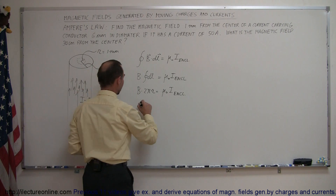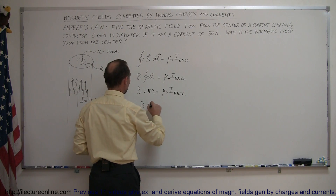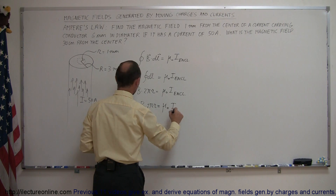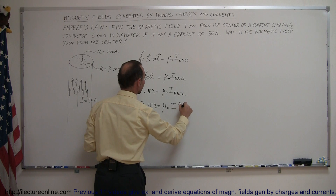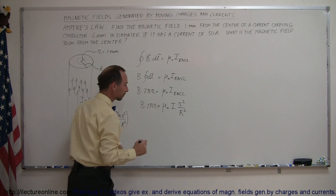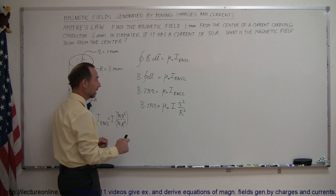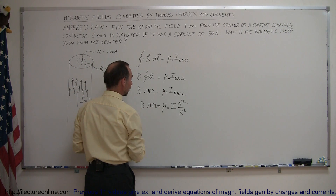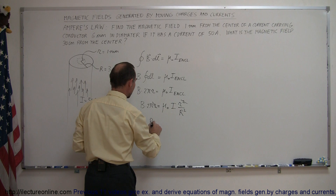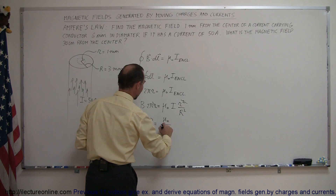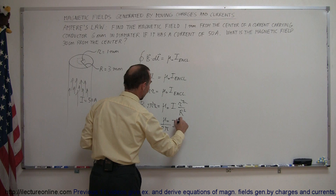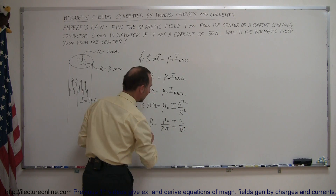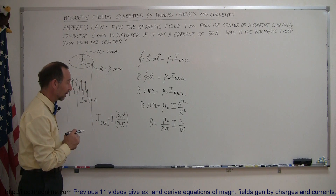We can put that in, so B times 2π times little r equals mu sub naught times total current times little r squared divided by big R squared. Then we see that one r cancels, and dividing both sides by 2π gives us B equals mu sub naught divided by 2π times I times the ratio of little r over big R squared. Now we're ready to plug in numbers.